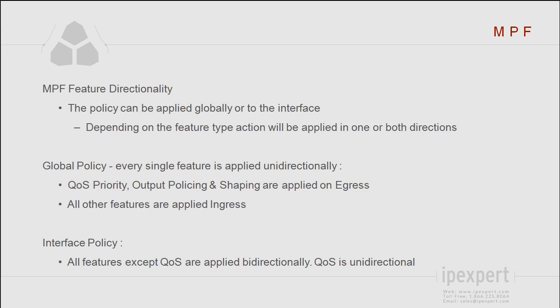Now, depending on where we apply our policy — whether the policy is going to be applied globally or to the interface — this is going to ultimately affect the direction in which actions will be applied to the packets. With the global policy, all outbound QoS features such as priority queuing, output policing, and shaping are always going to be applied egress, so in the outbound direction. For all other remaining features, they are always going to be applied ingress, so inbound.